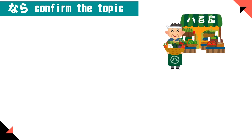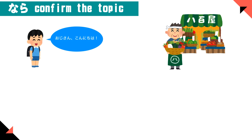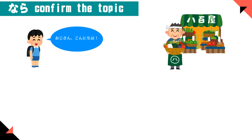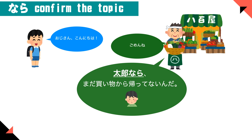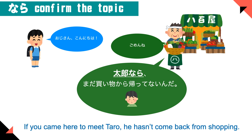Let's say a kid comes into a produce store to see the owner's son Taro. The store owner says: 'Gomen ne, Tarou nara mada kaimono kara kaette nain da.' — Sorry, if you came to meet Taro, he hasn't come back from shopping yet. The 'Tarou nara' part confirms that the kid came here to talk to Taro. So nara can be used to confirm the topic.